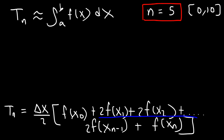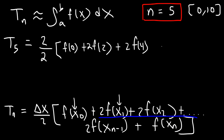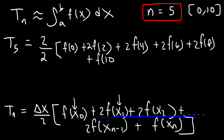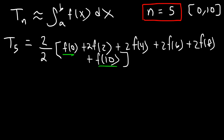Now let's finish this example. T₅ equals delta x over 2, and delta x is 2, which is 10 minus 0 divided by 5. The x-values from the number line start at 0 and increase by 2's since delta x is 2. So the formula becomes: (2/2) times [f(0) + 2·f(2) + 2·f(4) + 2·f(6) + 2·f(8) + f(10)]. The very first and very last terms are not multiplied by 2.